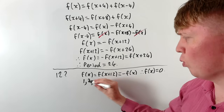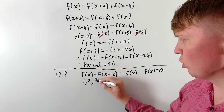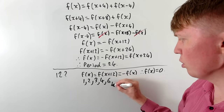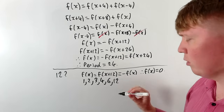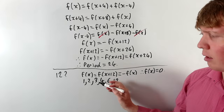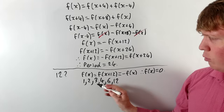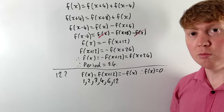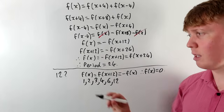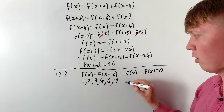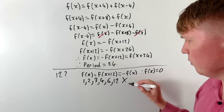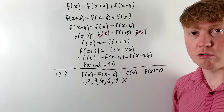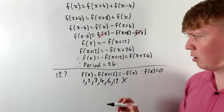This rules out 12 as a possible period, and it actually rules out all the other factors of 12 as well by a similar argument. Because if the function were 1-, 2-, 3-, 4-, 6-, or 12-periodic, then for example if it repeats every 3 it would also repeat every 12, landing us back in the trivial case. So all of these cases are ruled out if you want a non-trivial solution.